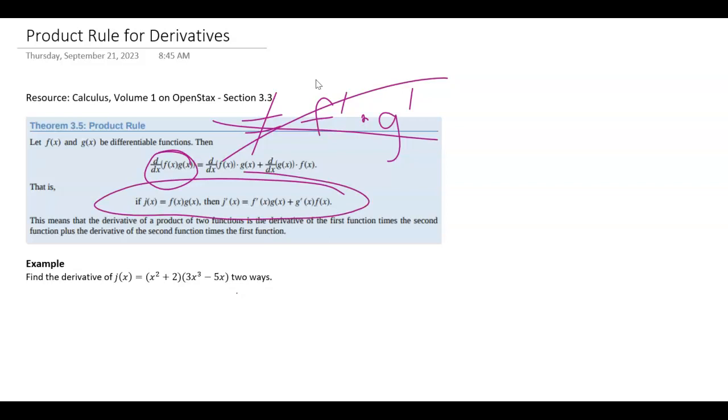I do prefer this notation down here. So if I need to find j prime of x, then I take the derivative of f first and then just multiply by g. And then it doesn't matter the way you do this. I say leave f alone this time and then take the derivative of g.